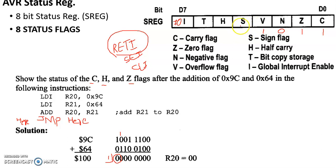Now, Sign Bit — that is the exclusive OR of the overflow flag content and the negative flag content. Since one of them is 1 and the other 0, the sign bit is 1. However, the result is actually positive — this is a special consideration related to two's complement representation.